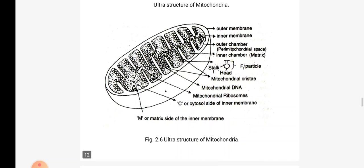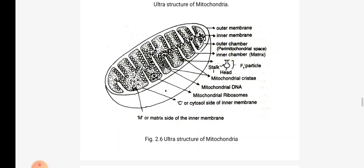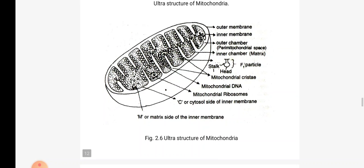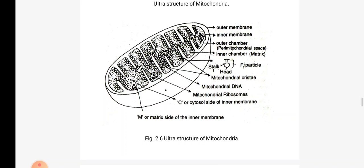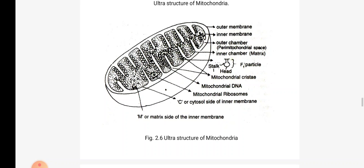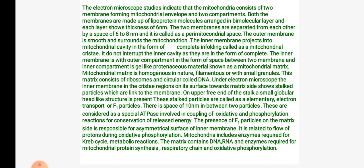This figure shows the ultrastructure of mitochondria. Mitochondrial DNA and ribosomes are present in the cytosol, represented by C, and matrix side means M. The electron microscope studies indicate that mitochondria consist of two membranes forming the mitochondrial envelope. Both membranes are made up of lipoprotein showing a bimolecular layer with thickness 6 nm. The two membranes are separated from each other by a 6 to 8 nm space called the perimitochondrial space.